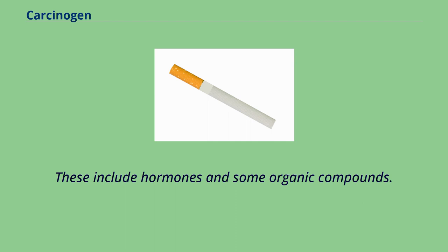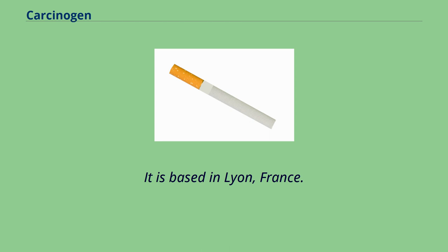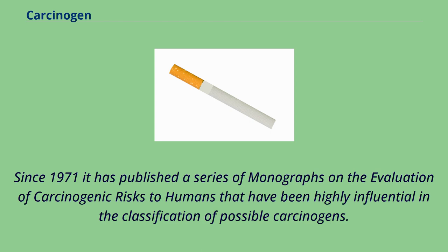The International Agency for Research on Cancer is an intergovernmental agency established in 1965, which forms part of the World Health Organization of the United Nations. It is based in Lyon, France. Since 1971 it has published a series of monographs on the evaluation of carcinogenic risks to humans that have been highly influential in the classification of possible carcinogens.